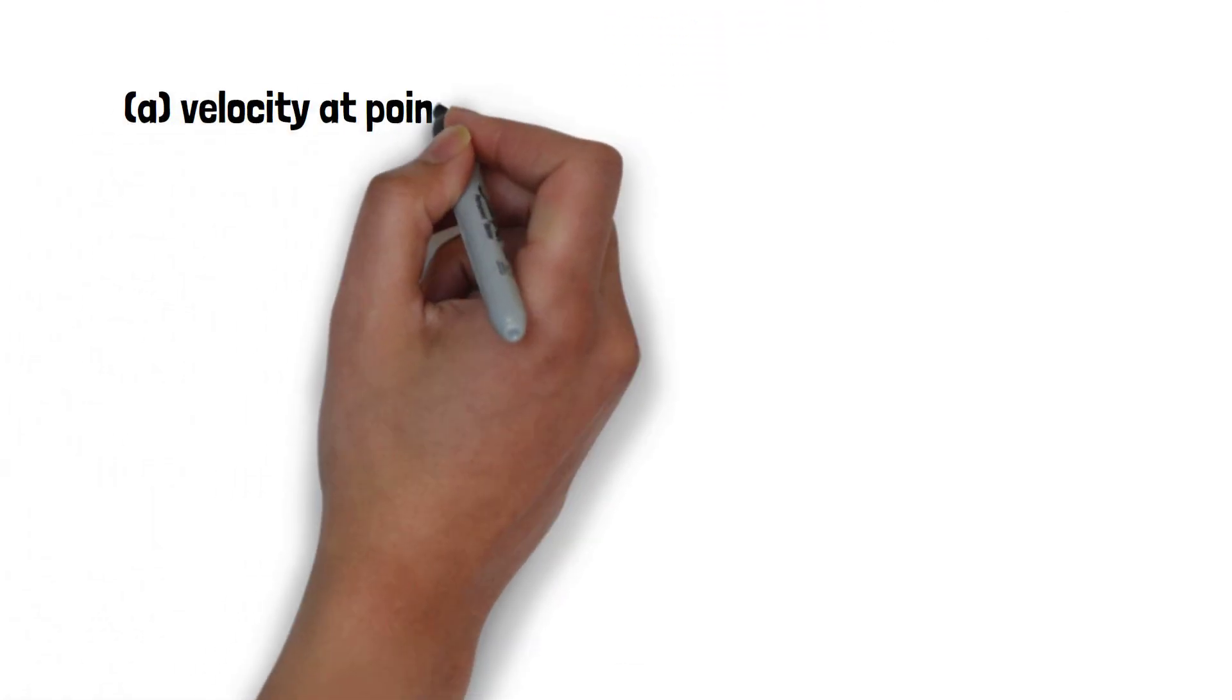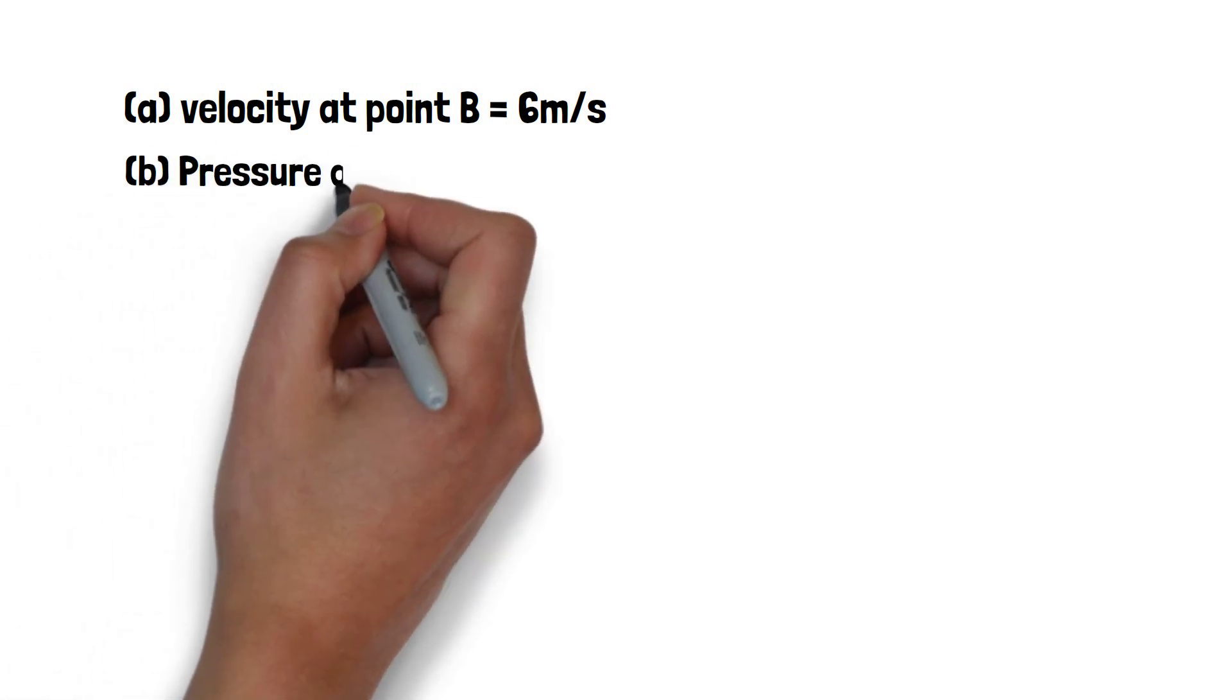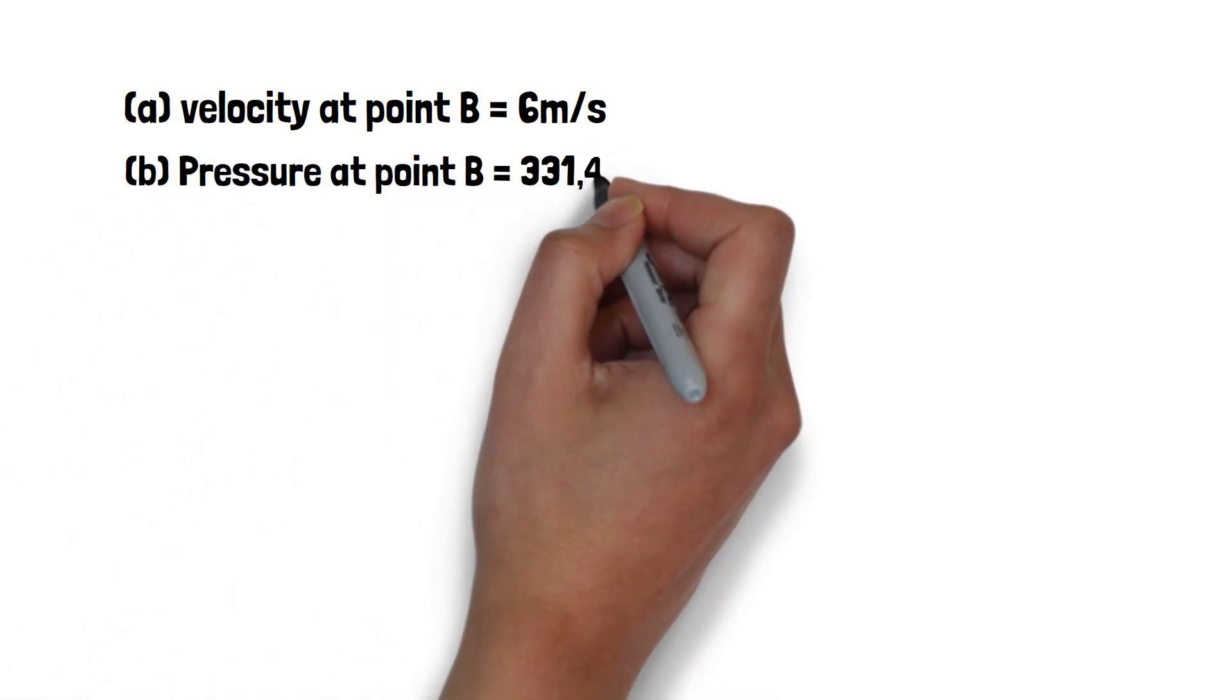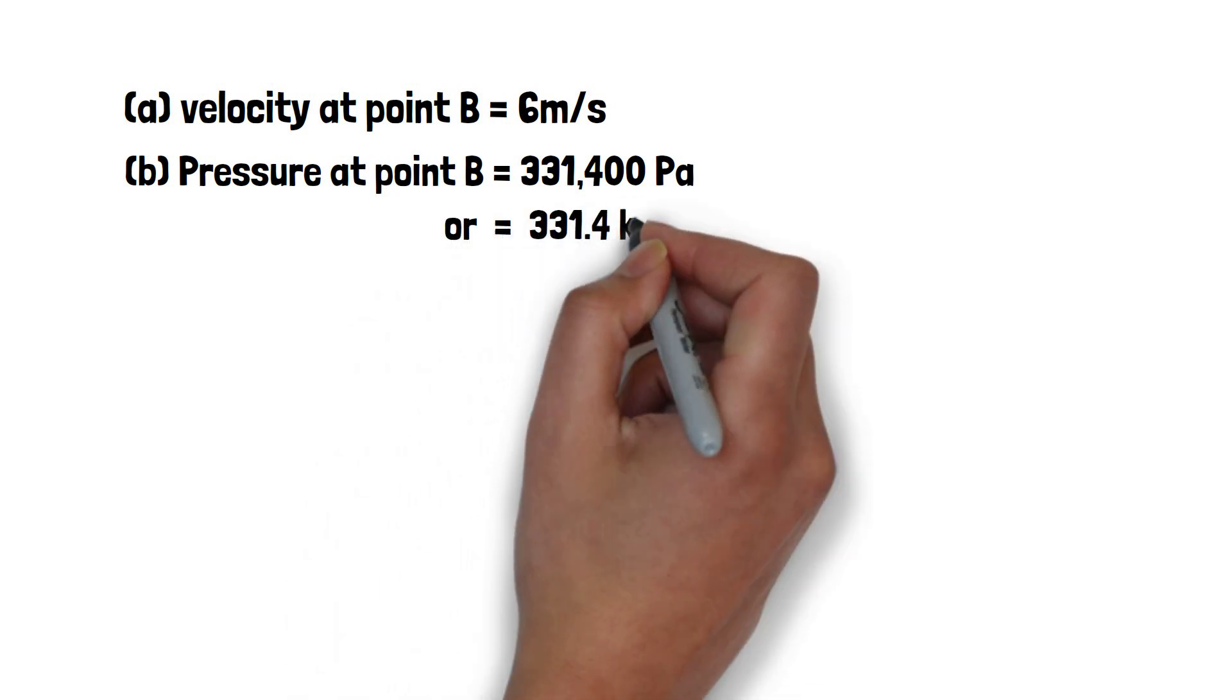In conclusion, our value for velocity at point B was found to be 6 meters per second and our value for pressure at point B was found to be 331,400 pascals or 331.4 kilopascals.